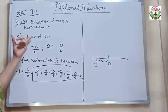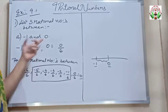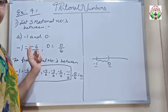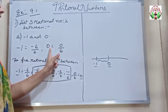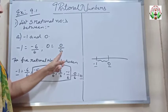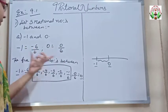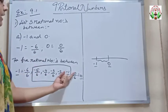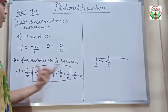In this question, they asked us to find Rational Numbers between minus 1 and 0. I wrote minus 1 as minus 6 by 6 by multiplying and dividing with 6, and wrote 0 as 0 by 6. So the Rational Numbers between minus 6 by 6 and 0 by 6 give us the 5 Rational Numbers between minus 1 and 0.